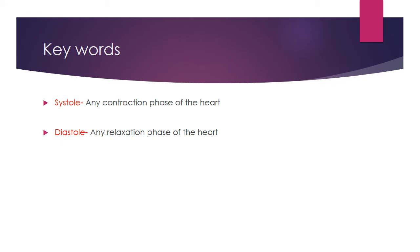Two key words referring to the contraction phases of the heart: when a certain area of the heart is contracting we refer to that as systole. If the atria are contracting we call that atrial systole; if the ventricles are contracting we call that ventricular systole. Equally, for the relaxation phase: if the atria are relaxed we call that atrial diastole, and if the ventricles are in a relaxation phase we call that ventricular diastole.